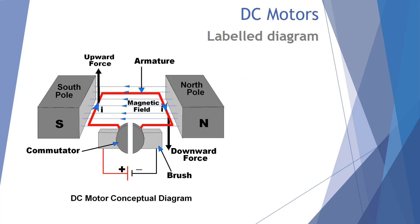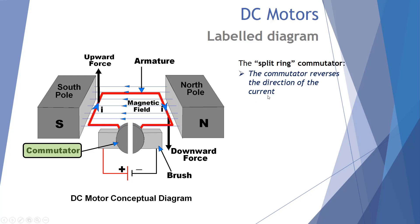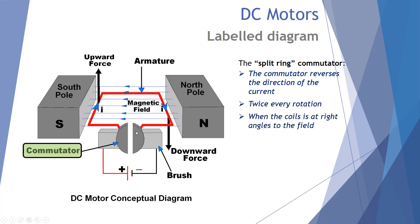To answer that, let's consider the DC motor diagram. We have what we call a split ring commutator — a ring shape with a split in the middle. The commutator reverses the direction of the current in the armature twice every rotation when the coil is at right angles (vertical) to the field, enabling the continuous rotation of the coil and armature.